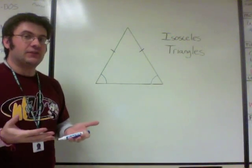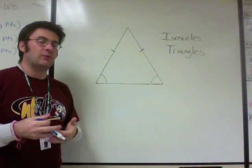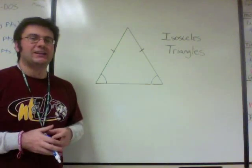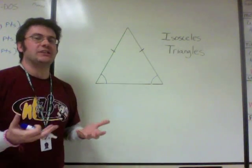The base angles in an isosceles triangle have their vertices at the endpoints of the third side. So that's our definition and theorem. Let's do a quick example problem to illustrate how to use these things.